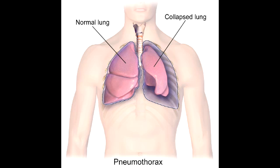Describe the tracheal deviation you would see with tension pneumothorax. In tension pneumothorax, you see the trachea deviating away from the affected lung.